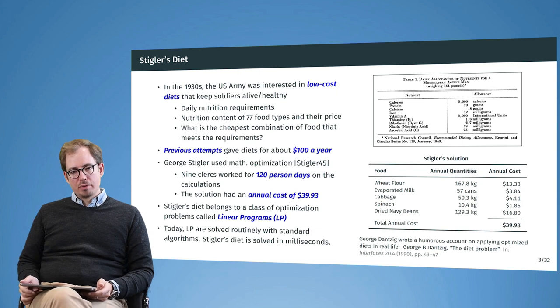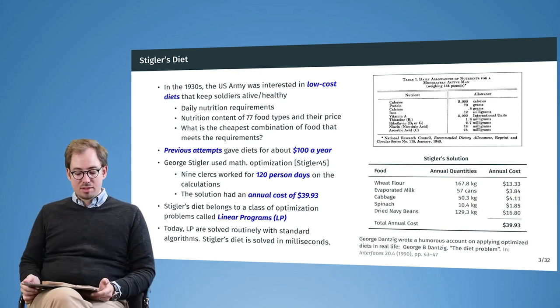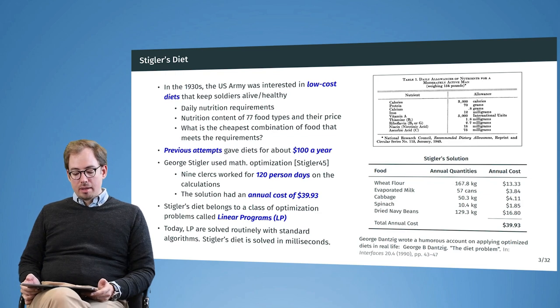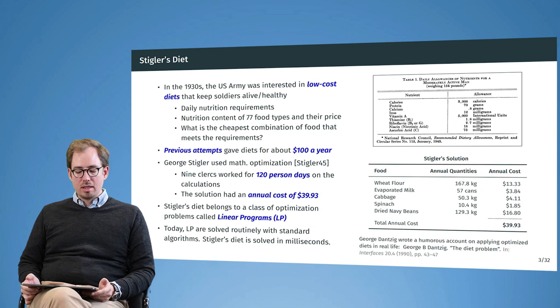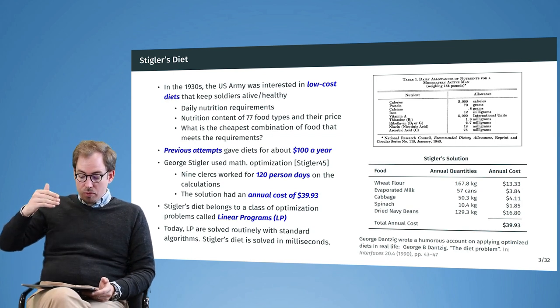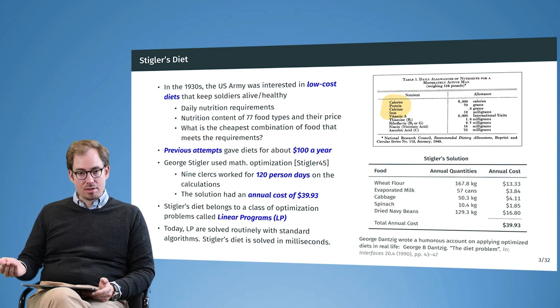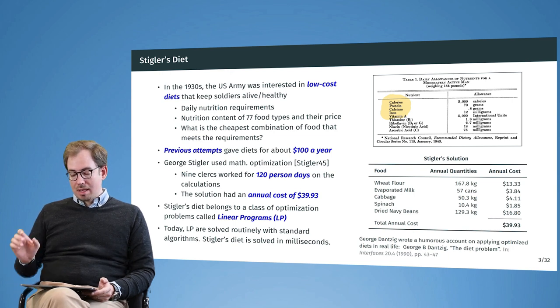Going forward a couple of years to the early 20th century, the US Army was interested in developing low-cost diets to keep soldiers alive. The big question is, if we know how many nutrients the soldiers need every day—how many calories, proteins, calcium, and so on—how can we feed them with a combination of ingredients that are as cheap as possible but lets the soldier live.